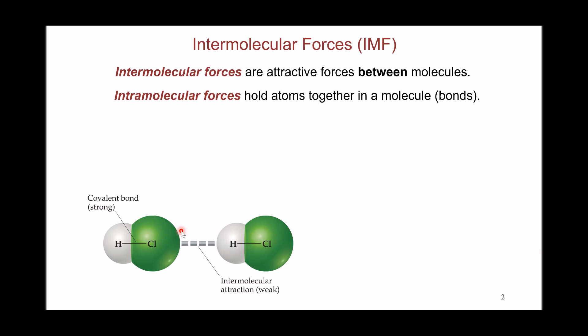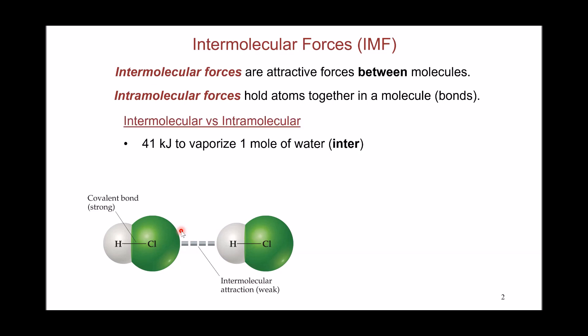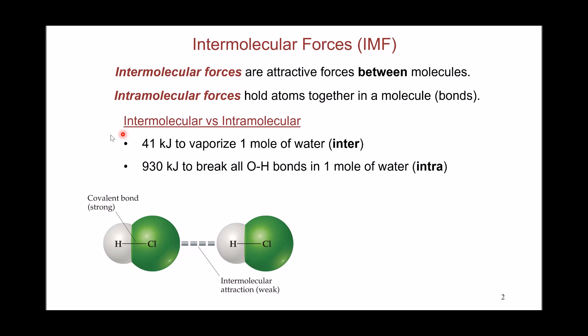To put things into perspective about the magnitude: if you want to transform a substance from one physical state to another, you're overcoming the intermolecular forces. For example, when you boil one mole of water, you're overcoming the intermolecular forces, and it takes 41 kilojoules to do this. In comparison, if you want to break the oxygen-hydrogen bonds within the molecule for one mole of water, it's going to require 930 kilojoules.